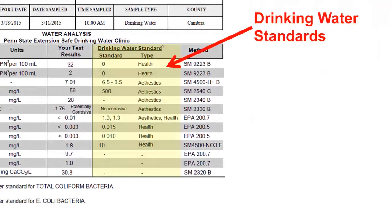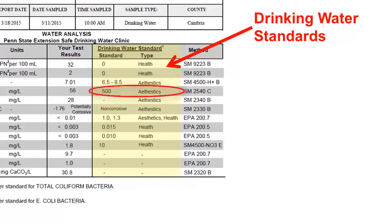The next two columns provide the federal and state drinking water standards and the type of standard. Drinking water standards are developed either because the pollutant causes health problems or because the pollutant causes taste, stains, or other aesthetic problems. On this report, we see that total coliform bacteria has a health-based drinking water standard of 0 colonies per 100 milliliters, so any measurable amount of coliform bacteria would represent a potential health problem. Conversely, the drinking water standard for total dissolved solids of 500 milligrams per liter is only because levels above 500 may cause taste or stains that make the water aesthetically unpleasing.